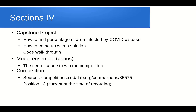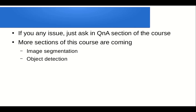Section 4 is a capstone project in which we will see how to find the percentage of area infected by COVID disease in a CT scan slice, and how to come up with a solution. I will walk through the code to describe the project. We will also learn how to ensemble models — not average ensembling, but a secret technique that enhances leaderboard performance. This competition is hosted on CodaLab, and at the time of recording I am in position 3. If you have any issues, just ask in the Q&A section of the course.